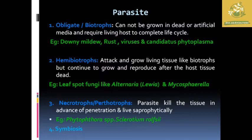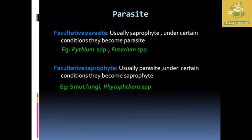Necrotropes, also called peritrotropes, are parasites that kill the host plant. These parasites advance through penetration and then live saprophytically. Examples include Phytophthora species as well as Pythium rolfii. Once these parasites enter the host plant, they kill the living tissues of the whole plant.